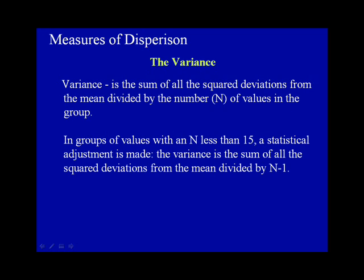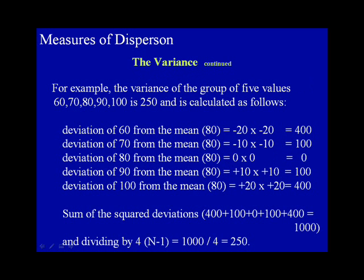The variance is the sum of all the squared deviations from the mean divided by the number of values in the group. In groups of values when N is less than 15, a statistical adjustment is made: the variance is the sum of all the squared deviations from the mean divided by N minus 1. Please look at the graphic in front of you for an example of how to calculate the variance for the values 60, 70, 80, 90, and 100. In this example, the variance is 250.